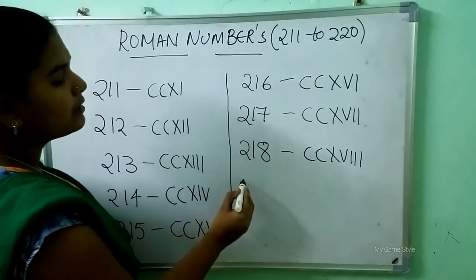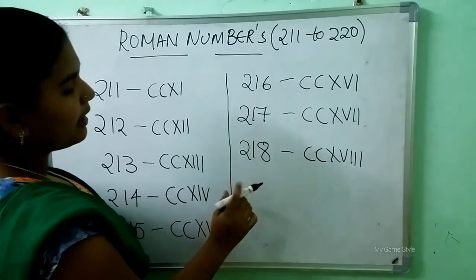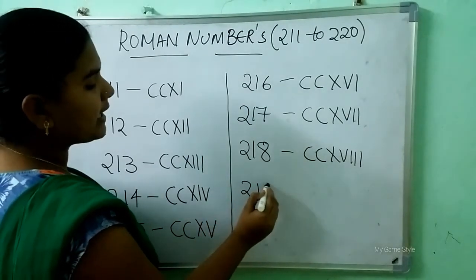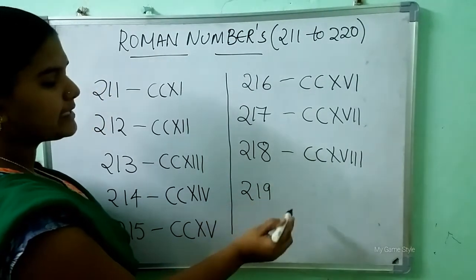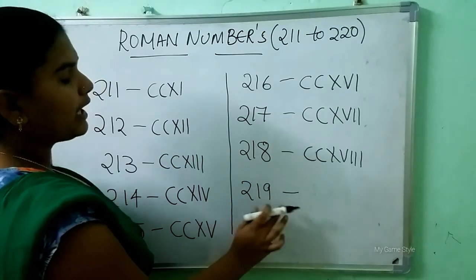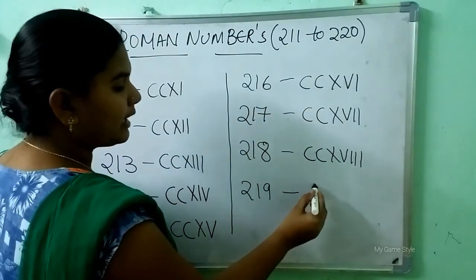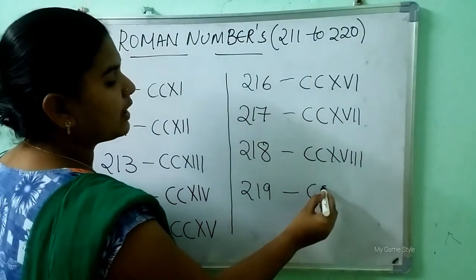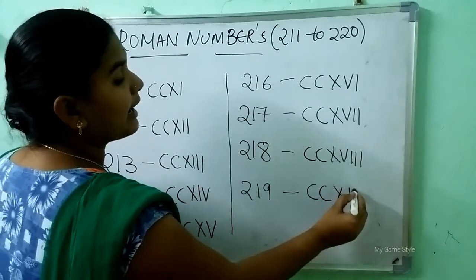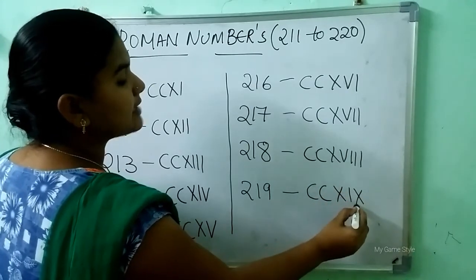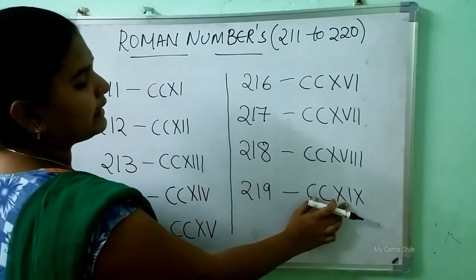After 218, which number comes here? 219. So how to write 219 here? Double C is 200, X, I, X means 19. So this means 219.